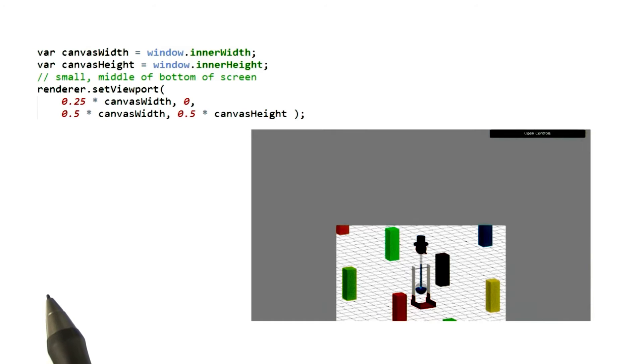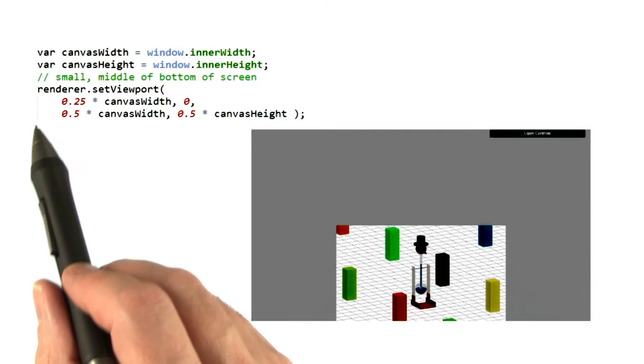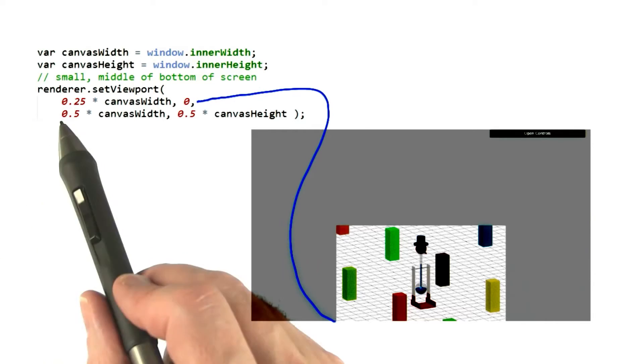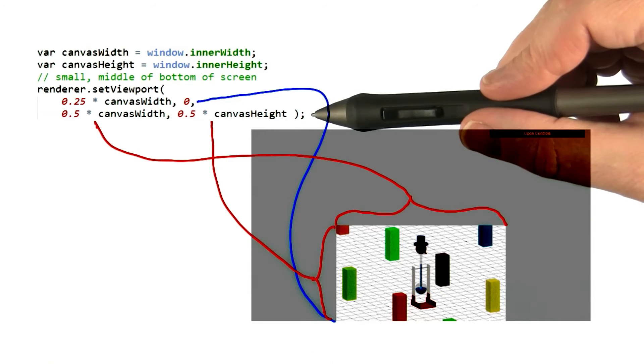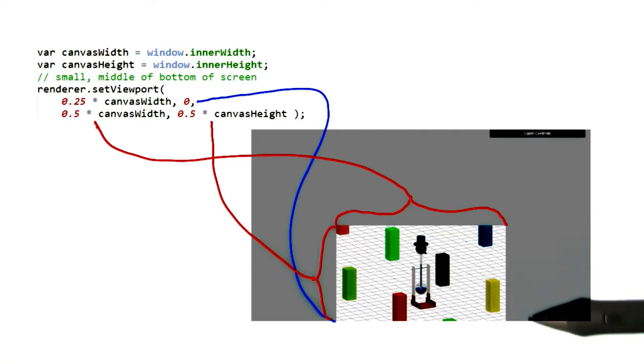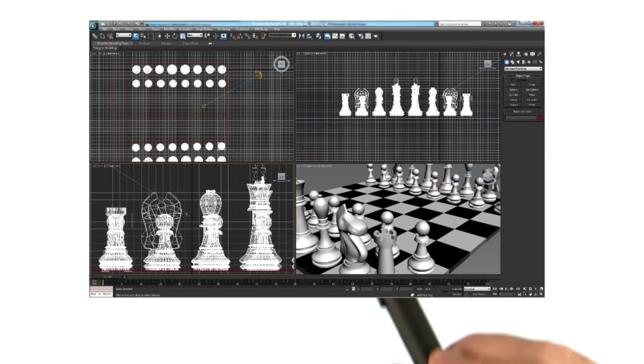In Three.js, you select some part of the screen using the set viewport method on the renderer. You give the lower left hand corner and set the width and height. The settings here say to put the lower left hand corner of the viewport a quarter of the way to the right of the origin and at the bottom of the screen. The viewport itself should be half the width and height of the window.